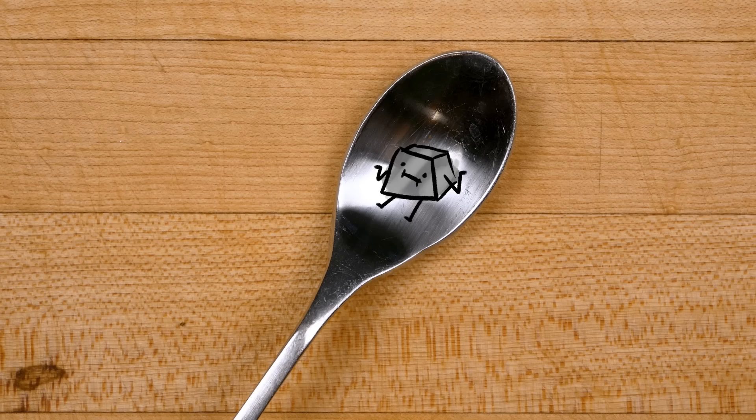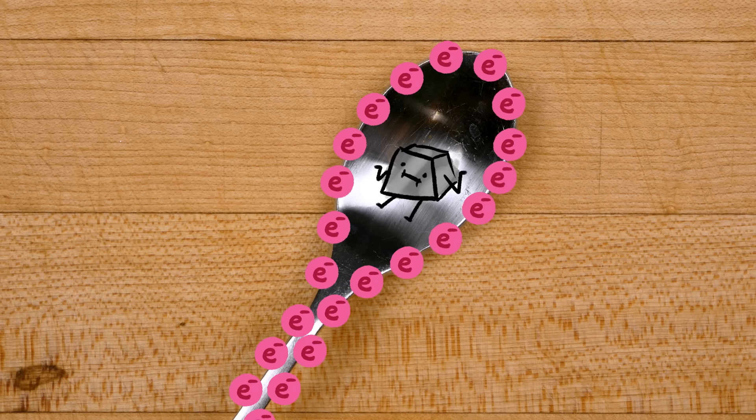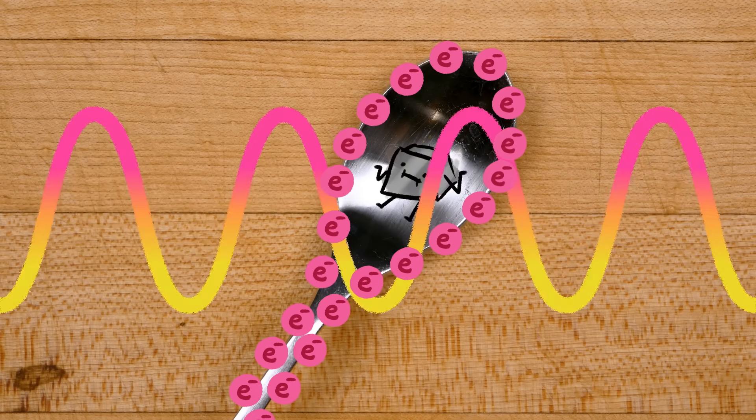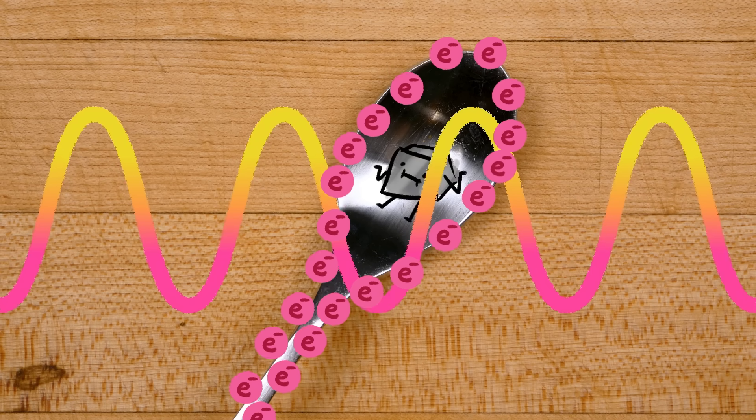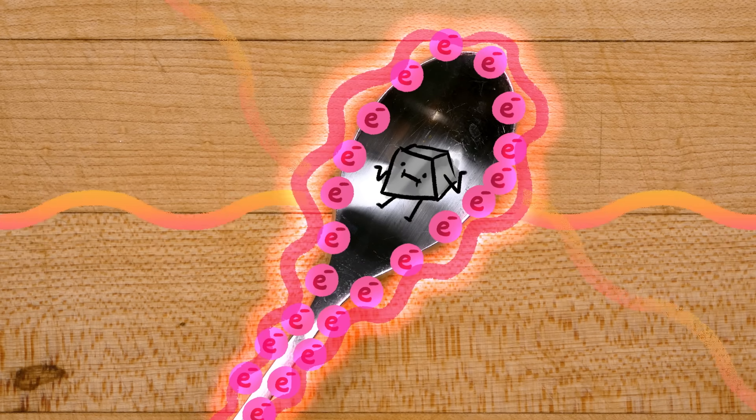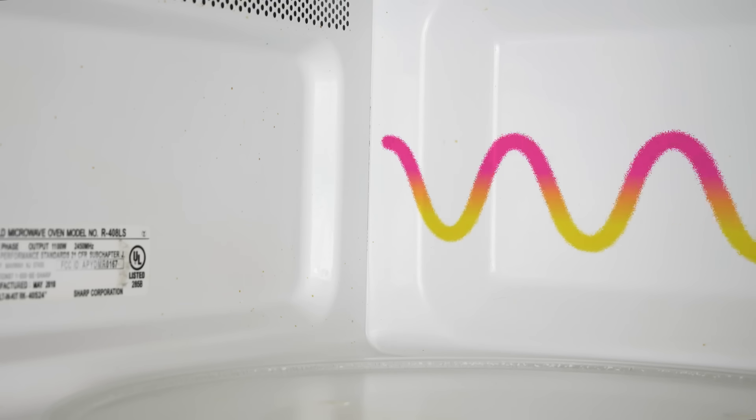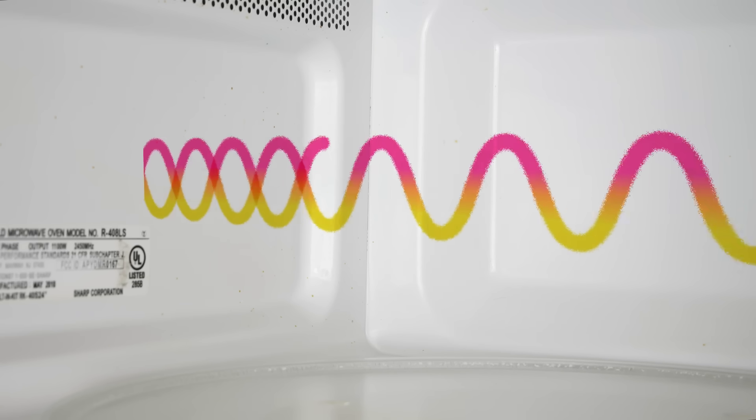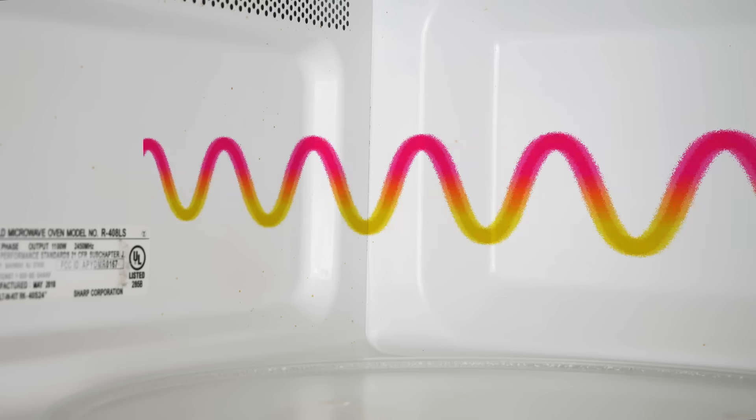Metals don't contain the same types of molecules, those that interact readily with microwaves. But they do contain lots of loose electrons floating around on their surface. When these electrons meet up with an oscillating electromagnetic field, they start sloshing back and forth. The sloshing electrons basically form a shield that re-emits most of the incoming electromagnetic energy. This is why microwaves are lined with metal. It reflects the electromagnetic waves, bouncing them around to create the oscillating field that cooks your food.